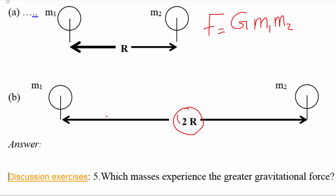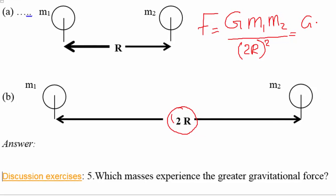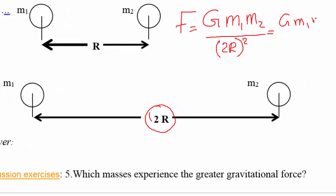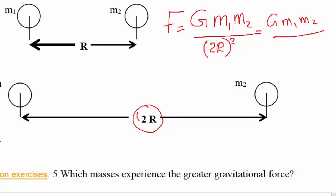We did not change the masses, so it's still m1 times m2 divided by the distance squared. Now the distance instead of r we have 2r, and remember it has to be squared. Applying the equation, we get G times m1 times m2 divided by (2r)². We square everything inside the parentheses, so 2 squared is 4 and r squared remains, yielding 4r².